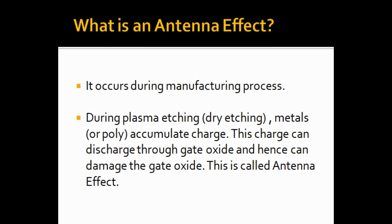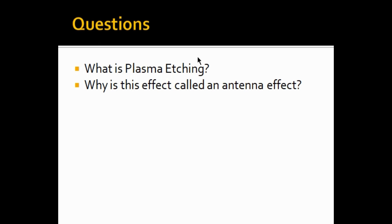Antenna effect occurs during the manufacturing process, specifically during etching. Etching means removing the unwanted materials from the surface. For etching we use a process known as dry etching, also called plasma etching. During plasma etching, metals or poly have the tendency to accumulate certain charges, and these charges discharge through the gate, damaging the gate oxide. This effect is called the antenna effect.